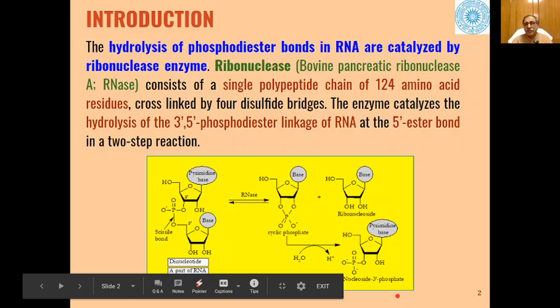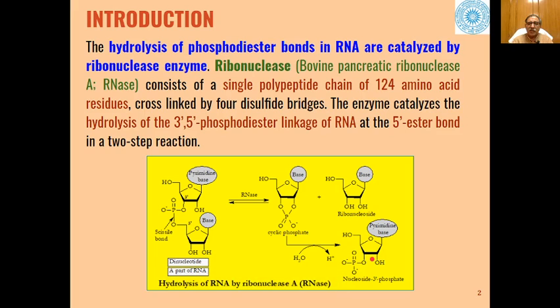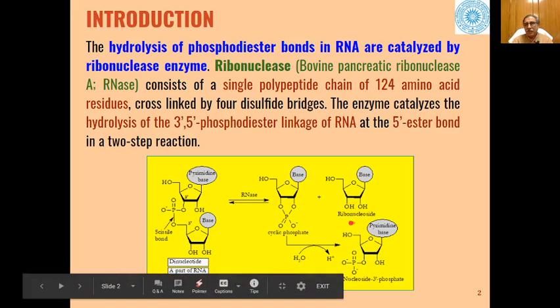Then this cyclic phosphate undergoes hydrolysis to give nucleoside 3′-phosphate as the other product. So basically, these are the two products of hydrolysis of RNA through the ribonuclease enzyme.